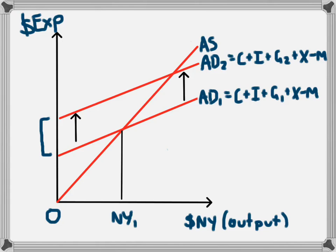You would expect from an increase in spending and an expansion of fiscal policy that will lead to an increase in national income. So national income will move from NY1 to NY2.